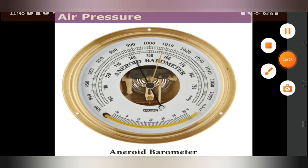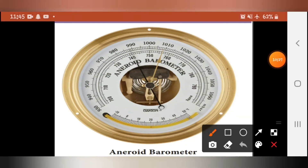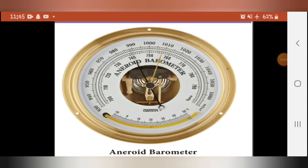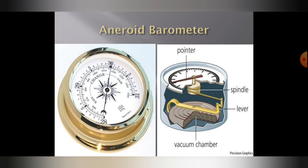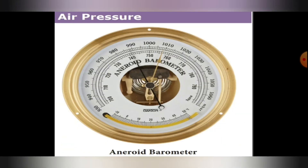Next is air pressure. The weight of air above a given area on the earth's surface is called atmospheric pressure or air pressure. An aneroid barometer picture is shown here. The air pressure is measured by a barometer.